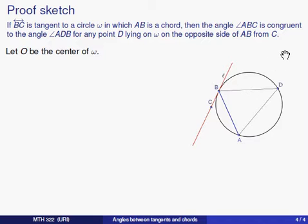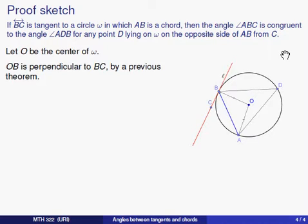We'll let O be the center, and then we will draw radii out from B to O and from A to O. Now, by the first theorem we proved today in our video series, OB is going to be perpendicular to the line BC.